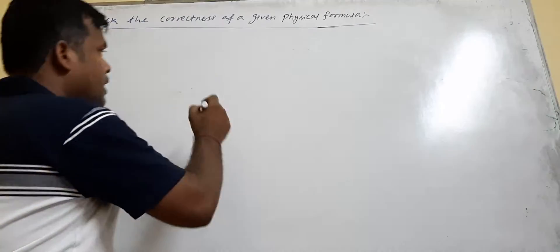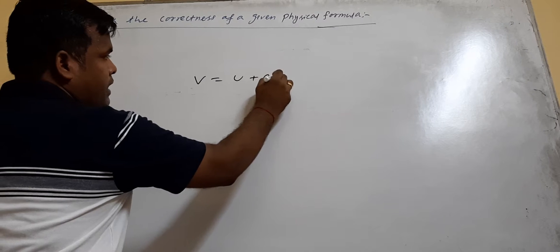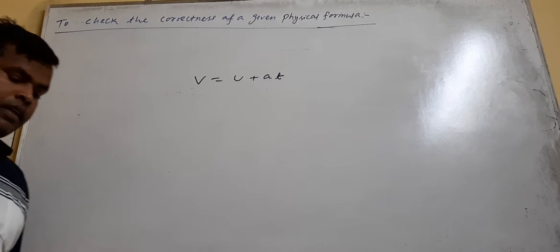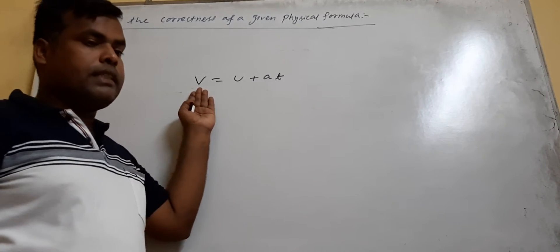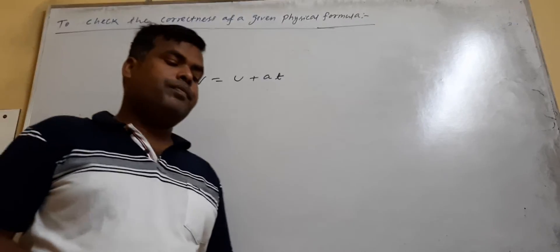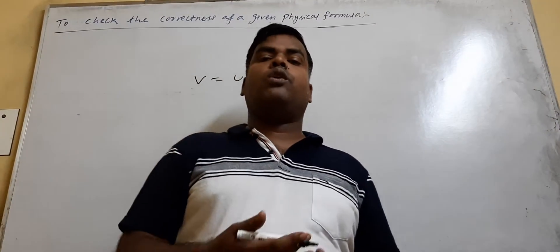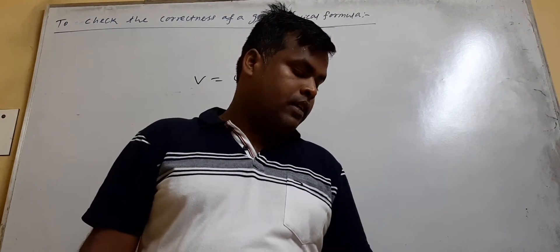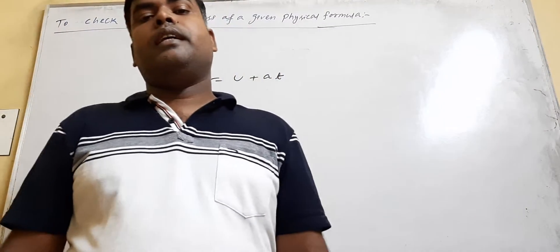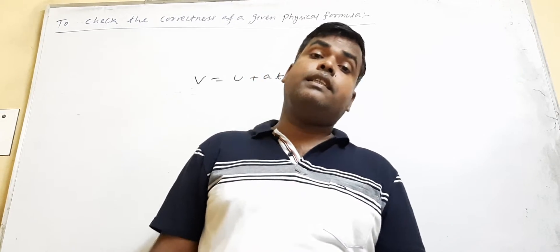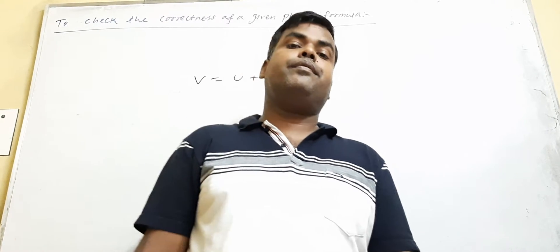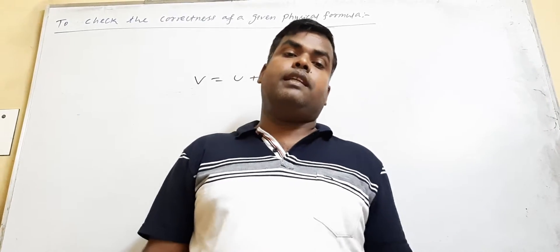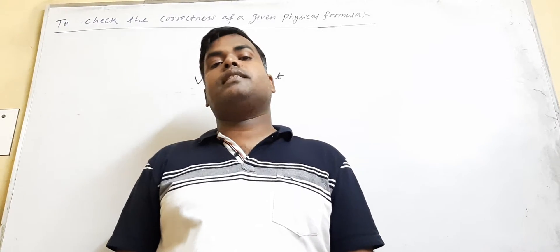For example, the formula given to you is v equals u plus t. Without knowing the concept of this formula, we can verify whether this formula is correct or not by using dimensional analysis. You remember, if the dimensions of each term of a given physical formula are same, then the formula is dimensionally correct.